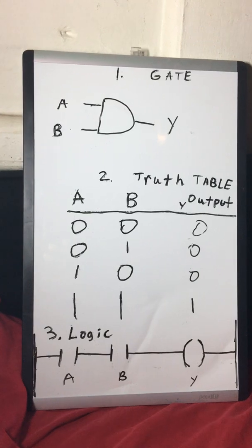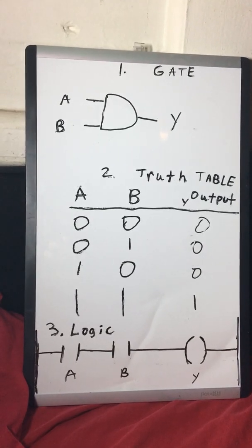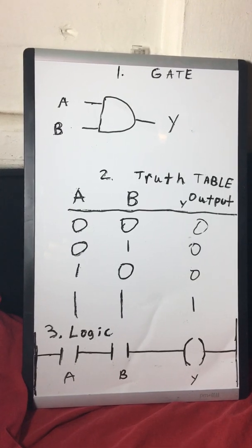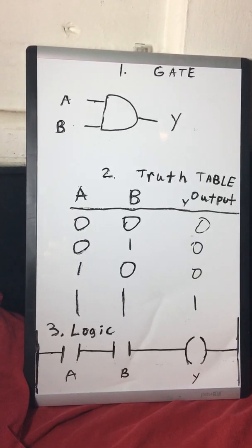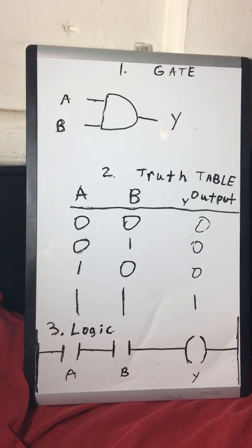Number two is the truth table, and number three is the logic. Where you see A and B - A and B are the inputs, and Y is the output.